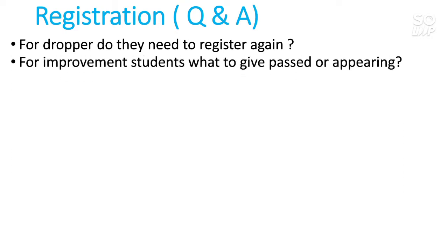The next question: for an improvement student, what to select — past or appearing? For an improvement student you should select 'past' because now you don't have to put any marks-related information and you don't need to upload any marksheet. By the time counseling happens and you are going to take admission, you will have your improvement result and you can put those marks at the time of counseling. So for now just select 'past'.